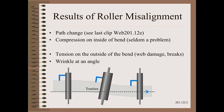As we learned in Module 2 of Web101, there are four risks for every single misaligned roller in your plant. The first, dealing with a path change, we covered in the last clip in this series. The second, compression on the inside of the bend, is seldom the limiting practical problem, so we will not focus on it here. The final two risks — damage on the outside of the bend and the wrinkle at an angle — must be the focus of any practical standards for roller alignment.